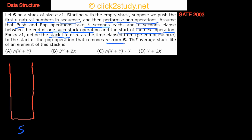Stack life of m is defined as the time elapsed from the end of push(m) to the start of the pop operation that removes m from S. I'll draw something to make it easier to understand. So you push the first n natural numbers — suppose you pushed 1, then 2, then 3, and so on up to the ith element, i+1th, and so on up till n.